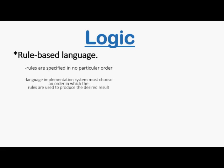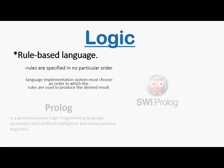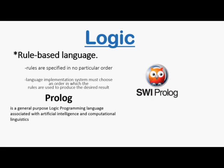The implementation system must choose an order in which the rules are used to produce a desired result. This approach to software development is radically different from those used with the other two categories of languages and clearly requires a completely different kind of language. A great example of a logic programming language is Prolog.